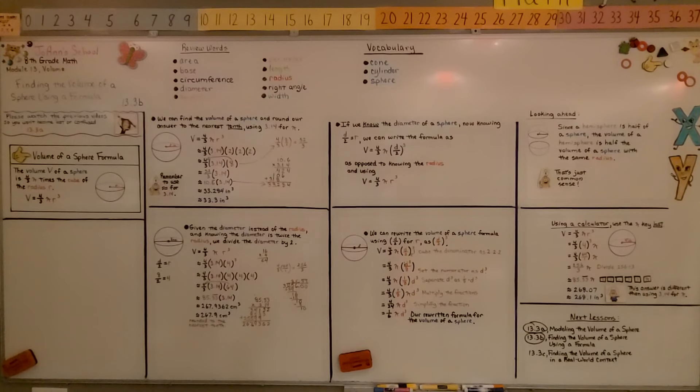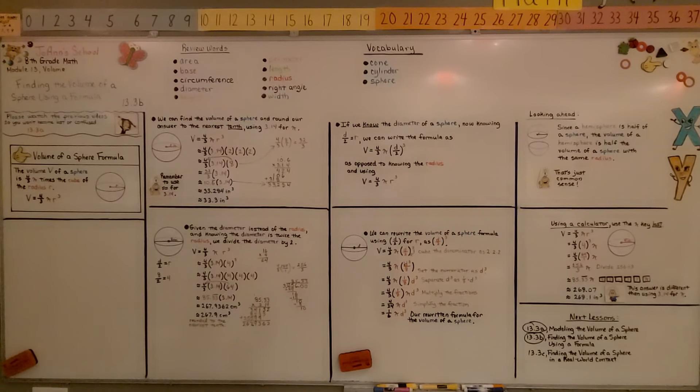Knowing the answer is different if we use a calculator because it accounts for more digits of pi, it's very important to follow the instructions. If it says to use 3.14 for pi, then you need to, otherwise it'll be wrong. You've got to do it the way it's asking you. And if it doesn't, if it just wants to know the volume, then you can use the calculator and use the pi key.